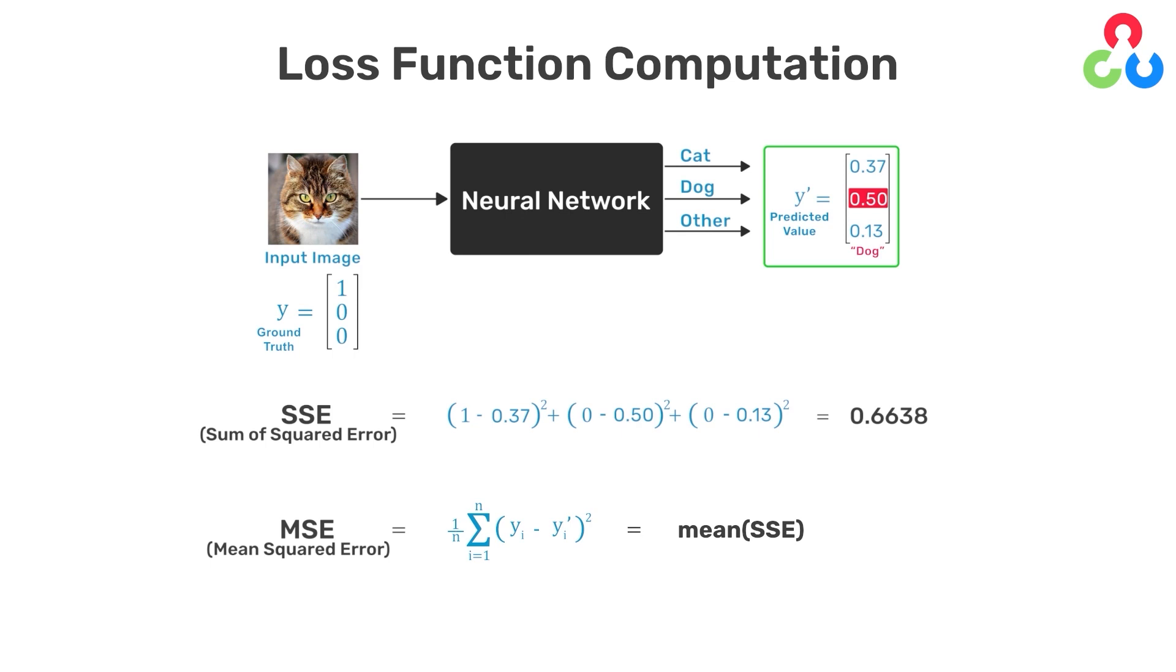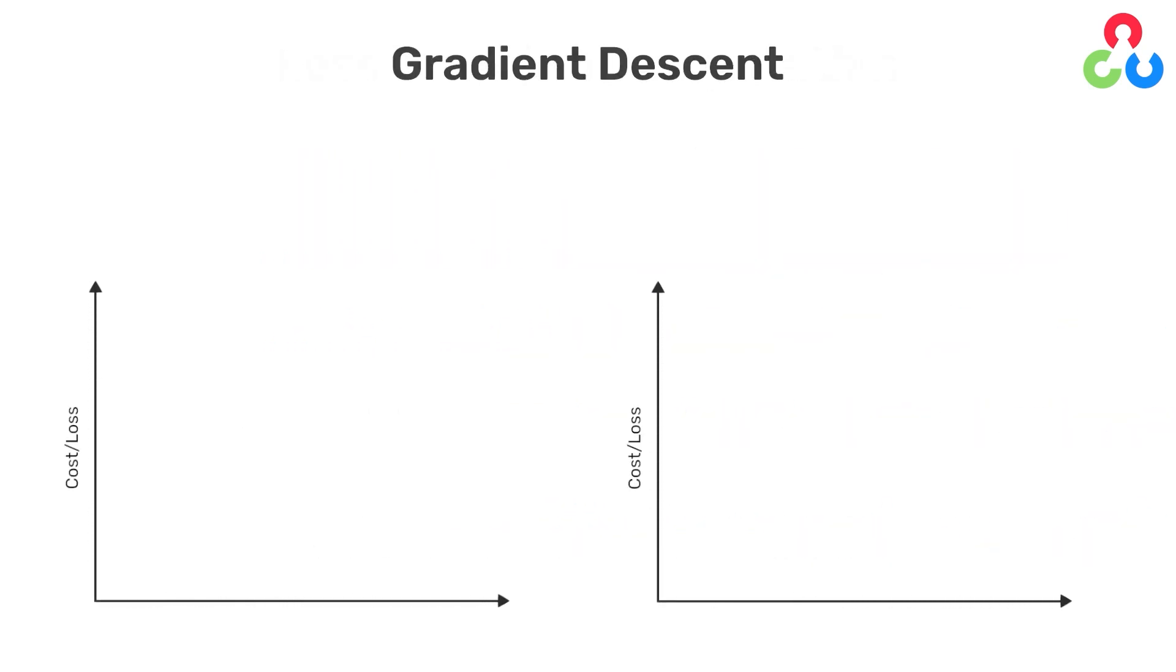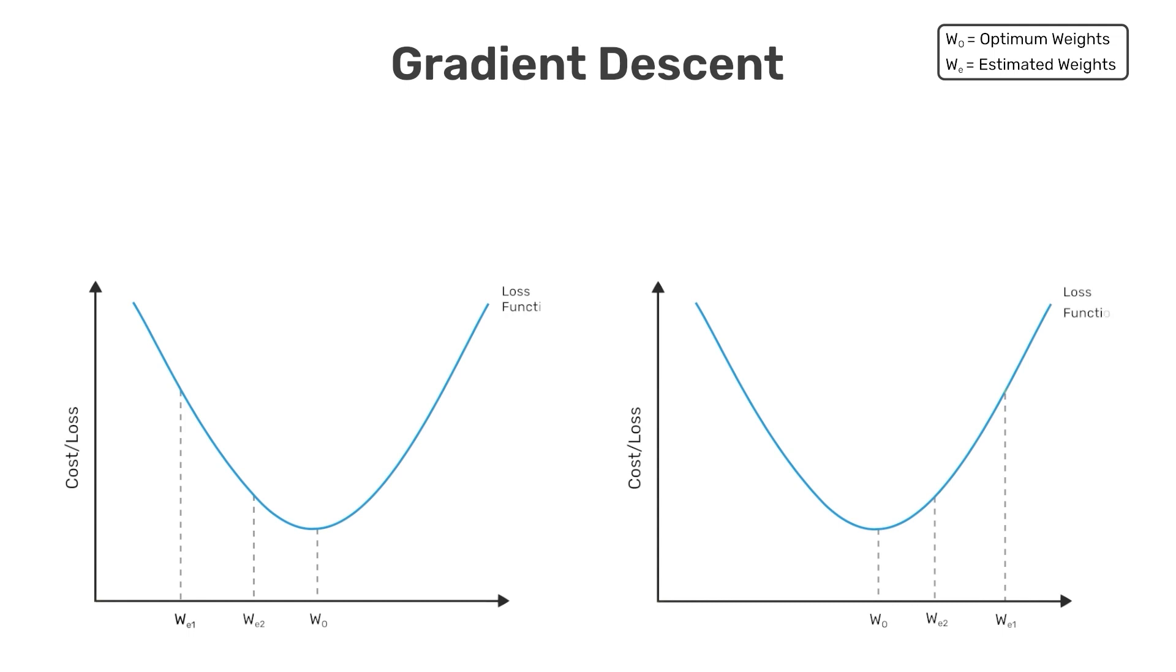For simplicity and visualization purposes, we're going to illustrate the concept with just a single tunable parameter called W, and we're going to assume that the cost function is convex and therefore shaped like a bowl as shown in the figure. The value of the cost function is shown on the vertical axis, and the value of our single trainable weight is shown on the horizontal axis. And let's assume that the current value of the weight is W_E1.